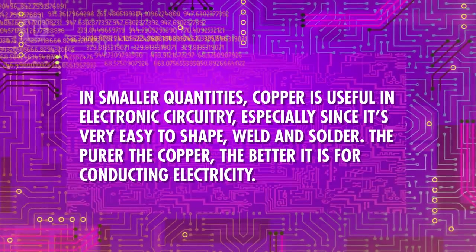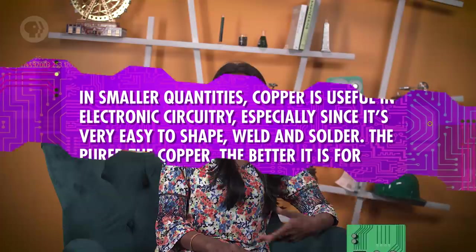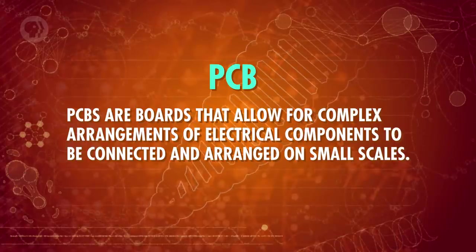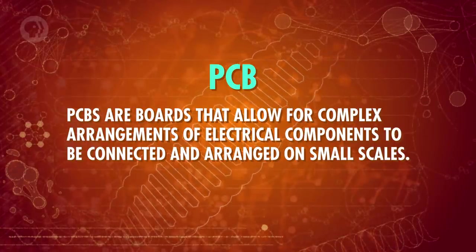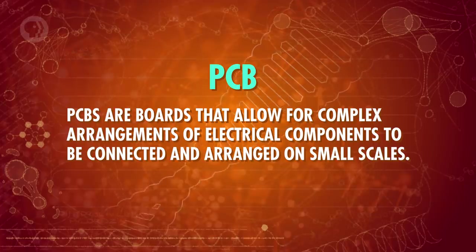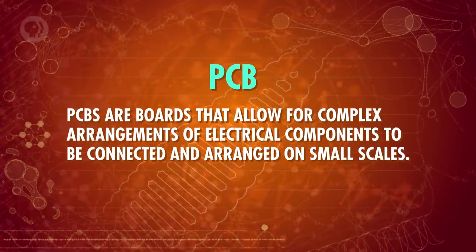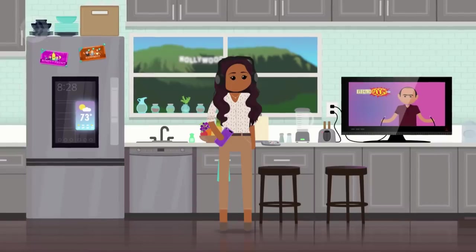The purer the copper, the better it is for conducting electricity. Perhaps one of the most important examples is in printed circuit boards, or PCBs. PCBs are boards that allow for complex arrangements of electrical components to be connected and arranged on small scales.